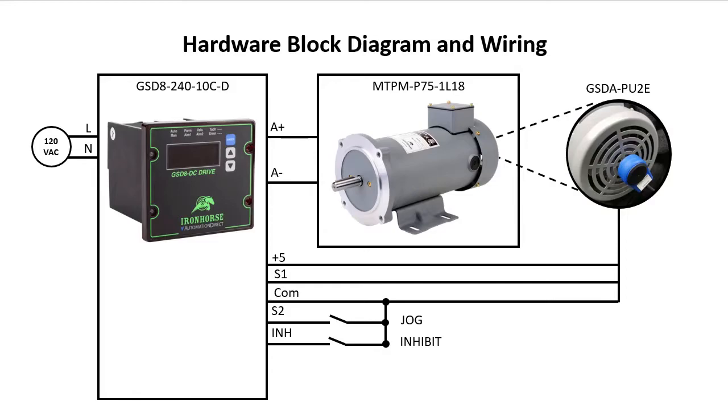I am using the same hardware that we used in the other videos where we have this drive controlling this motor which is connected to this encoder which is wired back to the drive. We also have the same inhibit and jog switch wired into the drive and I added an indicator to show us the status of the relay output.